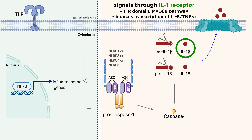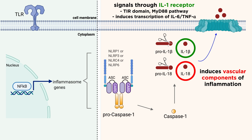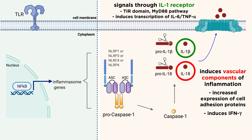This includes the cytokines IL-6 and TNF-alpha. IL-18 can induce vascular components of inflammation, such as increased expression of cell adhesion proteins with production of chemokines. It can also induce interferon gamma, which is an important cytokine for dealing with viral infections.